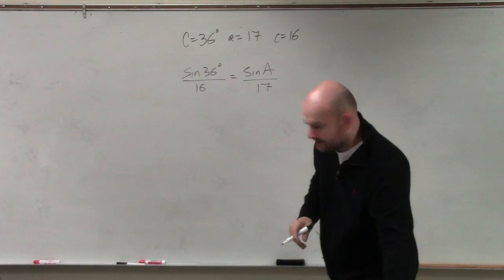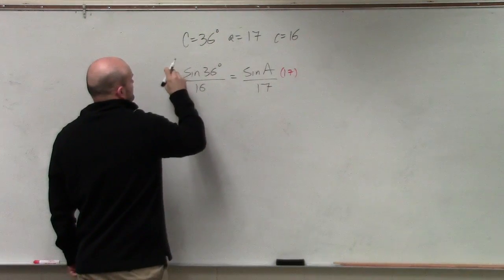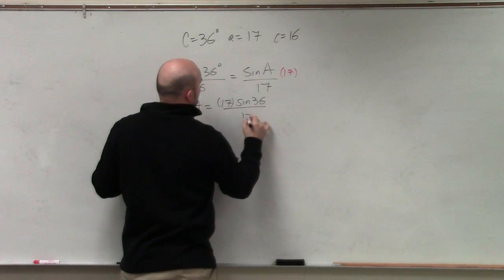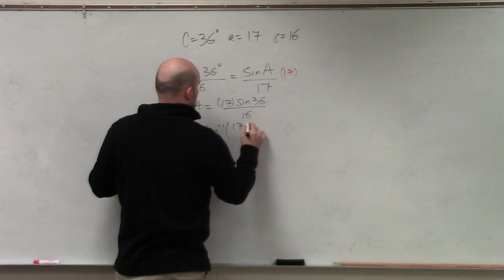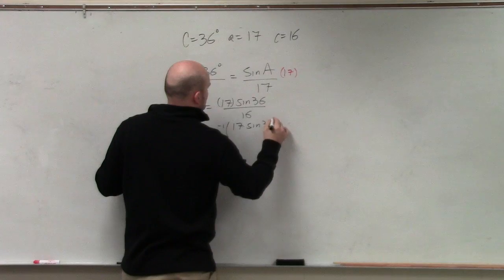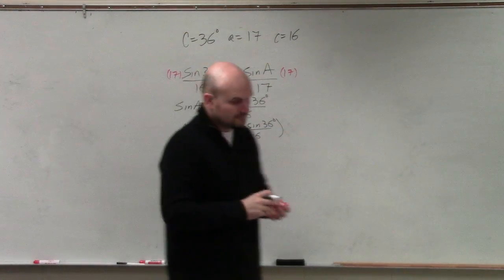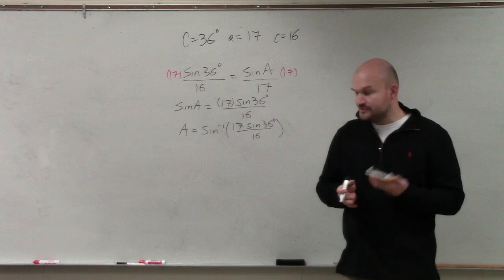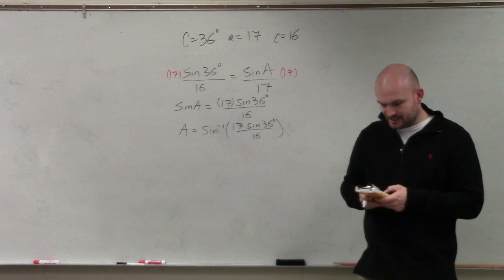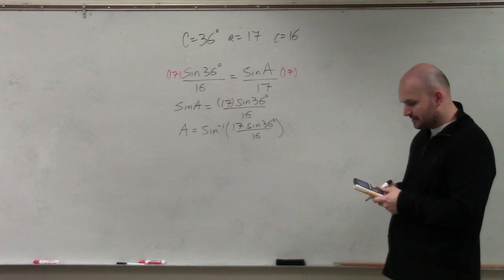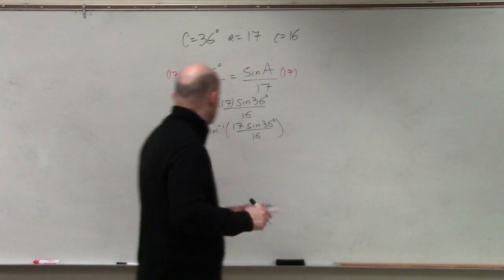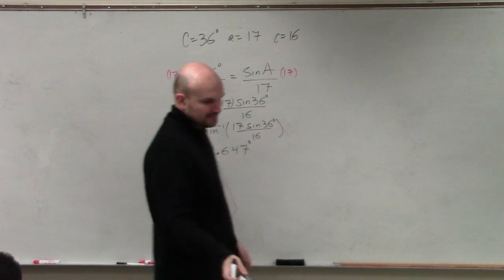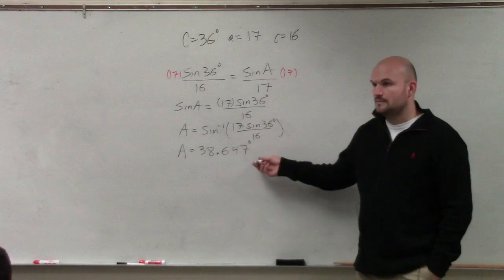So now I just basically solve for A here. So I just multiply by 17 on both sides. So I could say sine of A is equal to 17 times the sine of 36 all over 16. So you can do that first, or you can do that all in one function. So you just hit second sine, which gives you the sine inverse. And then I'll just do 17 times the sine of 36, close my parentheses, divide it by 16, and then close my parentheses one more time. And when you do that, you should get A equals 38.647.